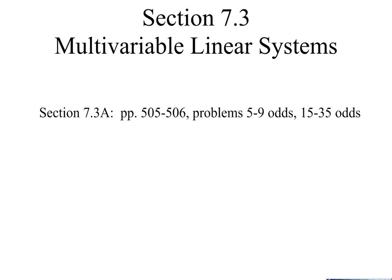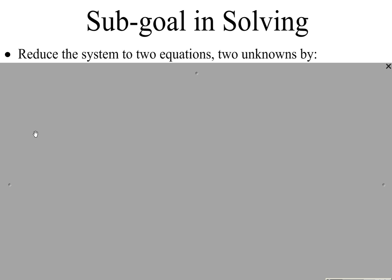Section 7.3, Multivariable Linear Systems. The sub-goal in solving three equations, three unknowns, is going to be to reduce the system to two equations, two unknowns.